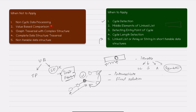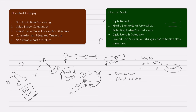For value-based comparisons use two-pointer or another approach. For graph traversal with complex structures — where a node points to two or three others — use BFS, DFS, or another graph traversal algorithm rather than slow and fast. When complete data structure traversal is required, there is also no need for slow and fast. Similarly, if the data structure is non-iterable, do not use this pattern since you cannot traverse it properly.